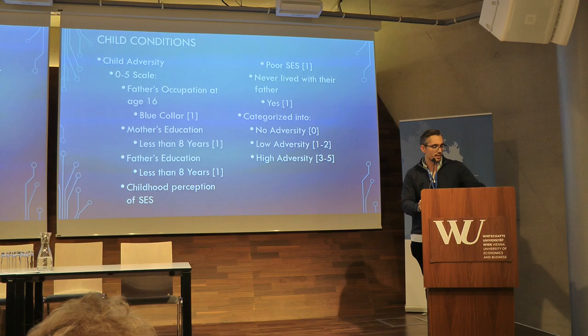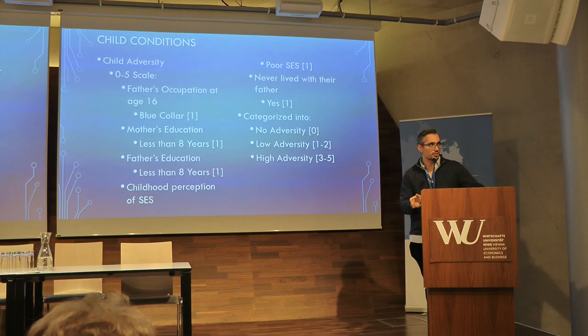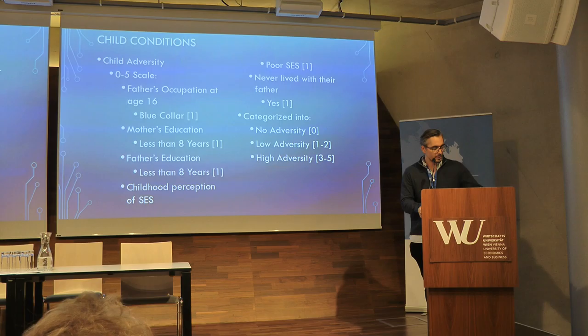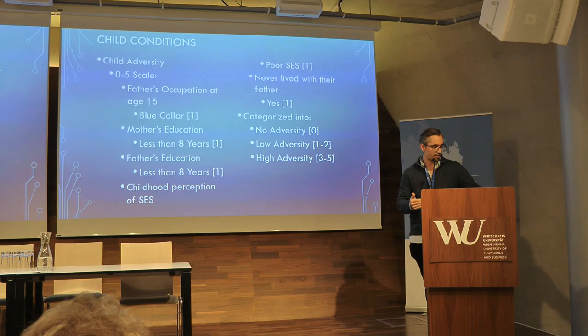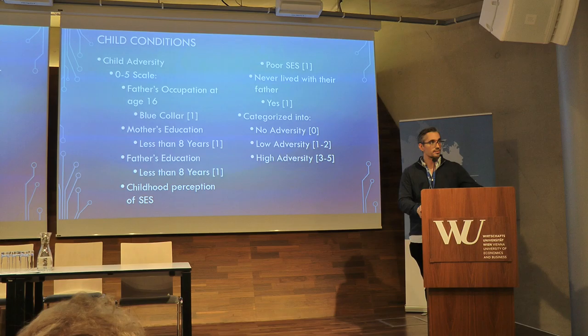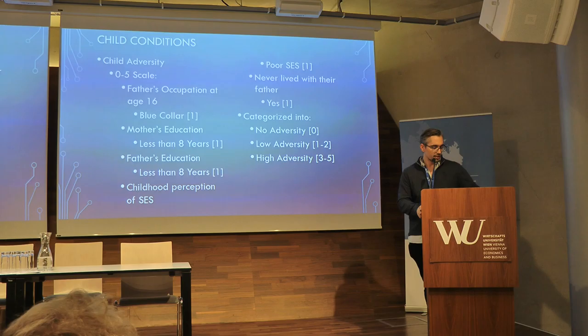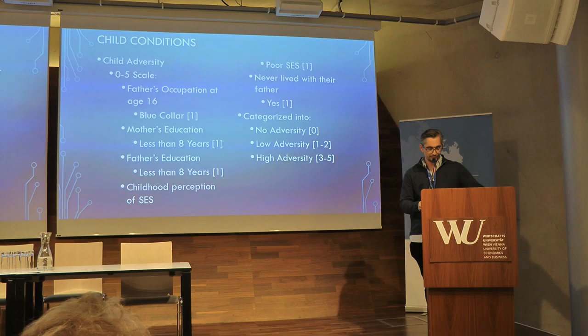For childhood conditions, one caveat: because of the limitations of the HRS, when we talk about child adversity we're really talking about economic adversity — so the ACEs literature on other adverse experiences doesn't fully apply here. The measure goes from 0 to 5, with higher scores indicating more adversity. Components include: father's occupation at age 16 (blue collar = 1), mother's and father's education both less than 8 years (= 1), childhood perception of SES dichotomized as poor or good, and never having lived with a father. We then categorize this into no adversity, low adversity, and high adversity.